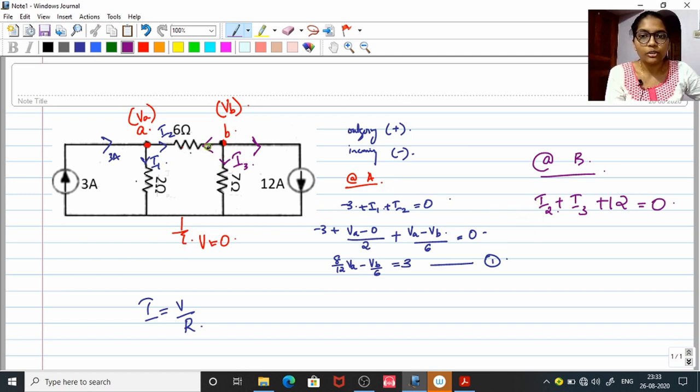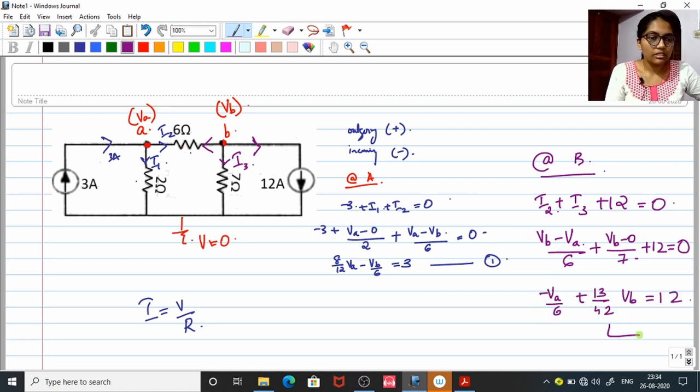What is the value for I2? I2, in this case, current is flowing from right side to left side. So right side potential minus left side potential, that is VB minus VA divided by 6. Right side potential is VB and left side potential is VA, so VB minus VA divided by 6 plus I3 is flowing from upside to lower side. So upside potential is VB and lower side potential is 0. So VB minus 0 divided by 7, VB minus 0 divided by 7 plus 12 equal to 0. So your equation is, this is your equation number 2.